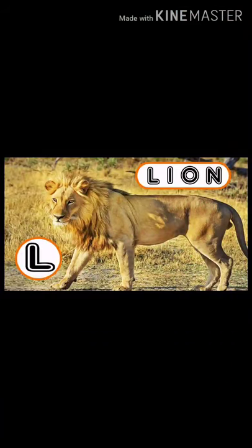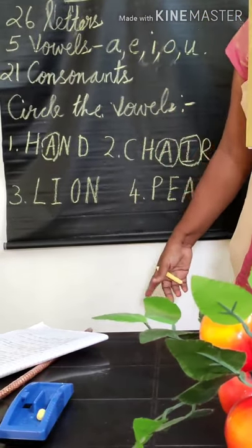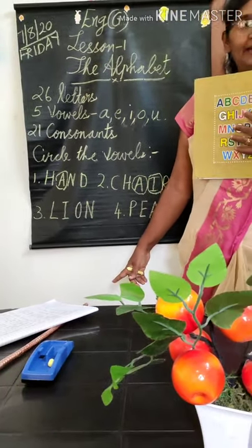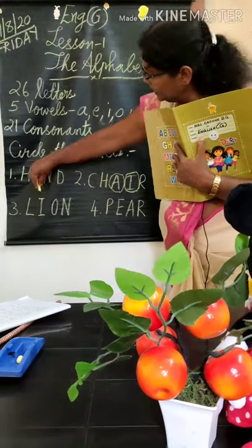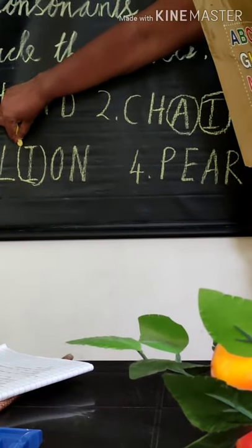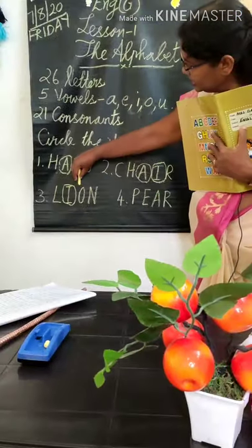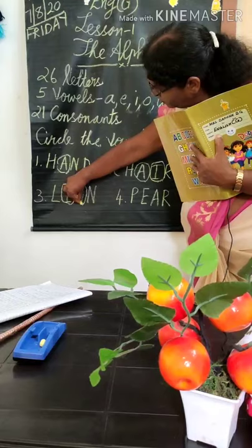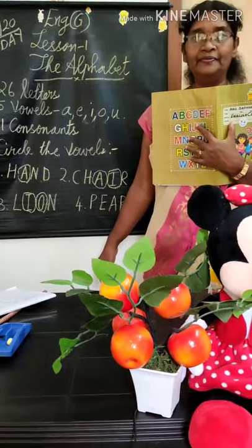Third one is LION. L is a consonant. I is a vowel sound — circle I. O is also a vowel sound — circle O. N is a consonant.